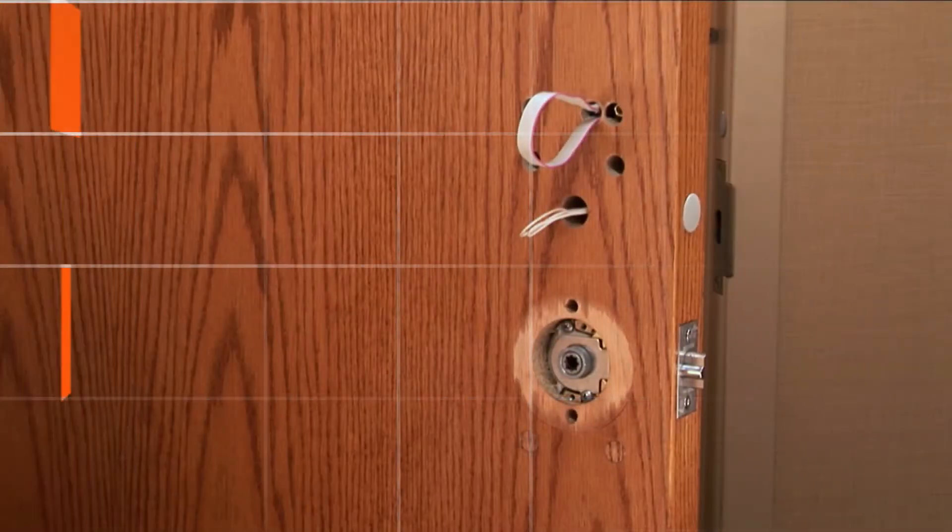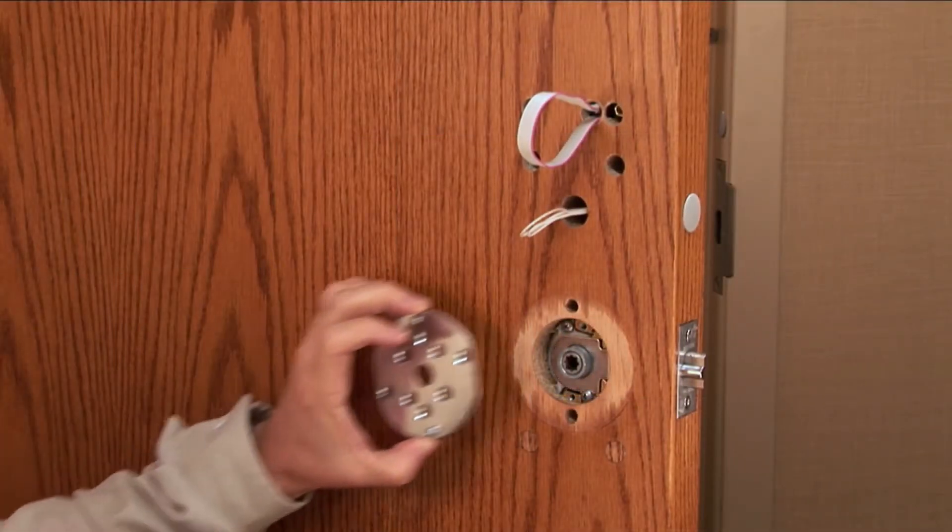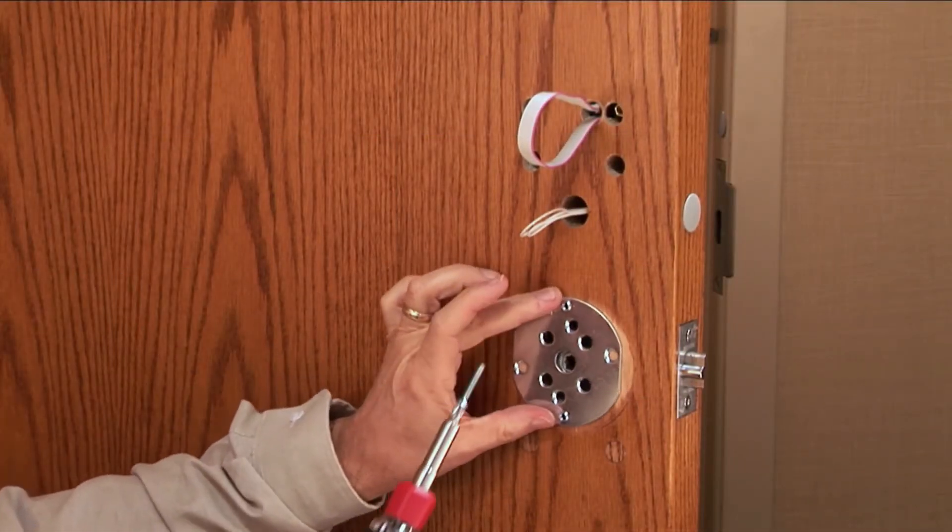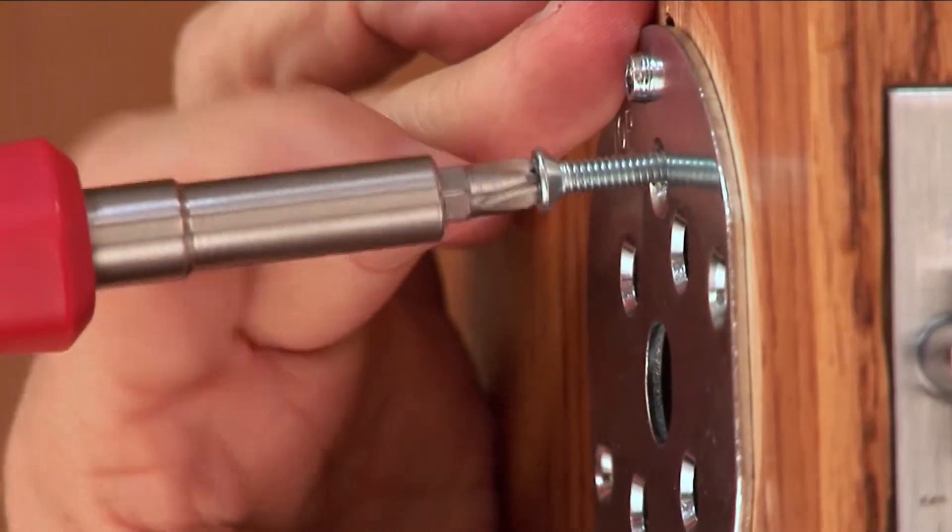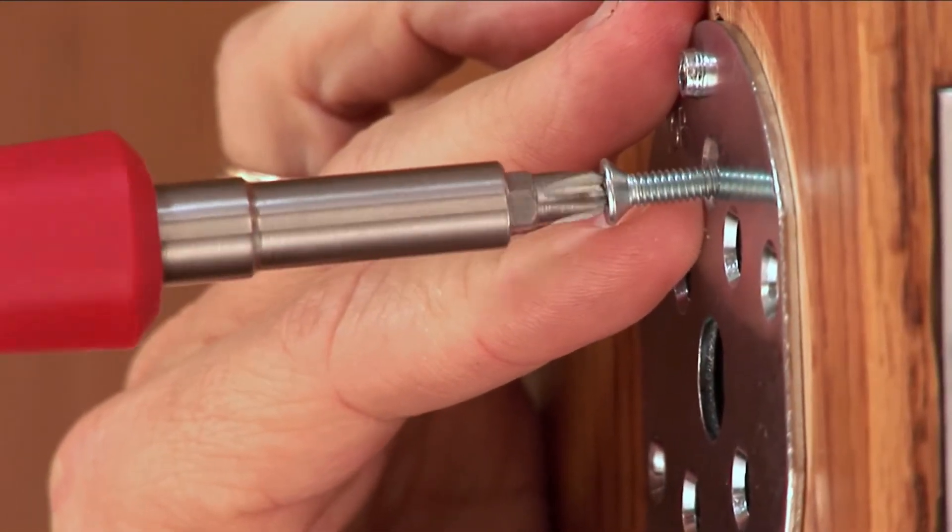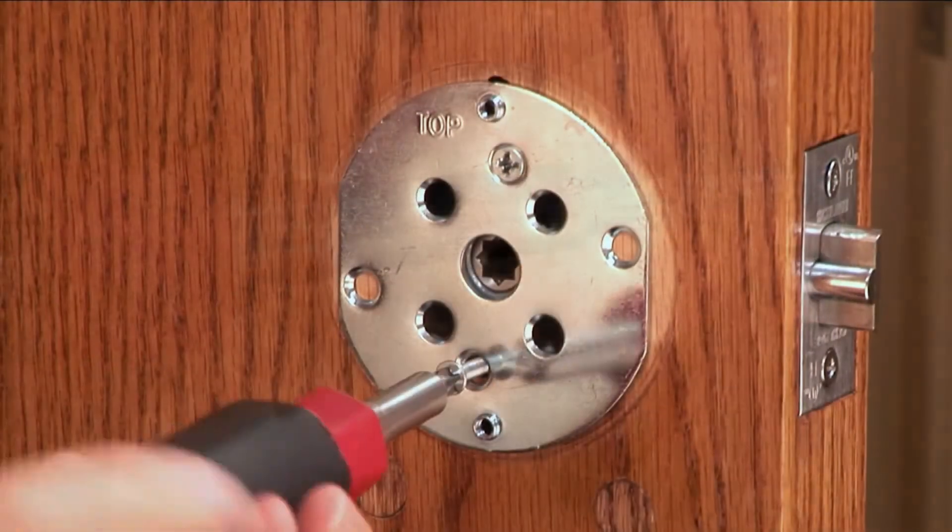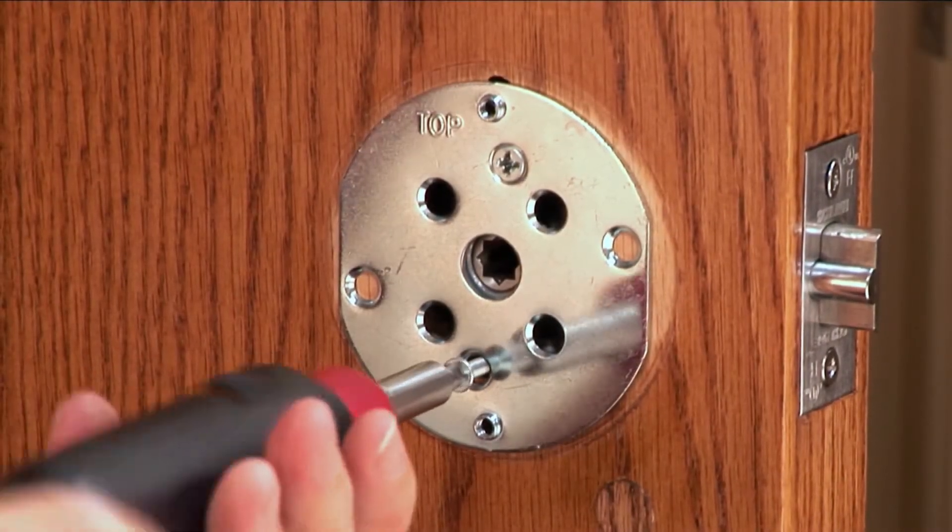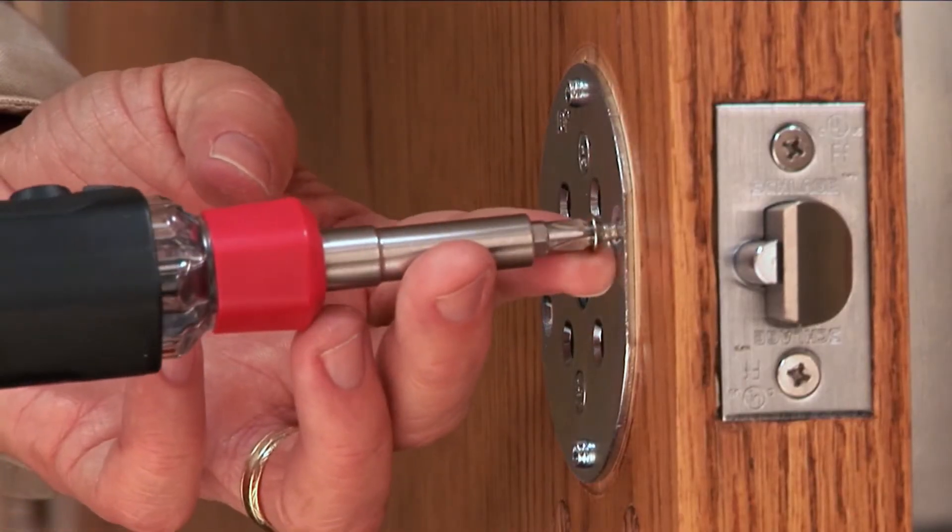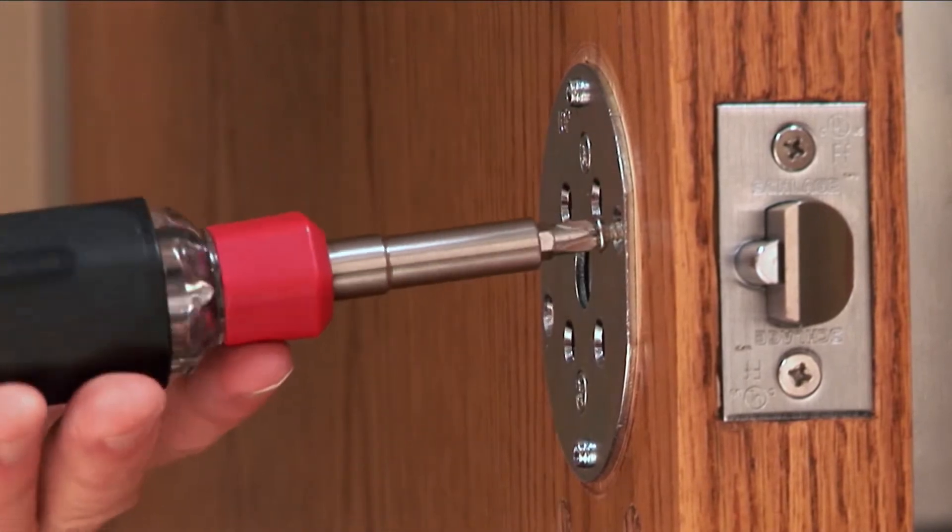When the unit is flush with the door, center the anti-rotation plate vertically over the latch retractor. Insert and tighten the flathead screws into the two holes that align with the prongs from the outside assembly. Then install the two self-tapping screws on either side of the plate.